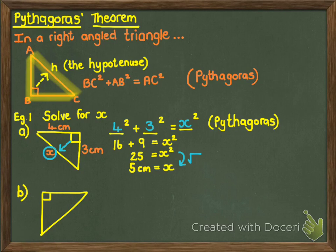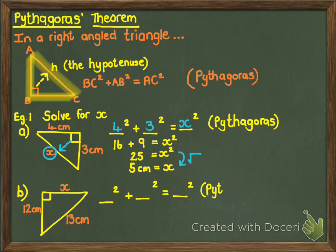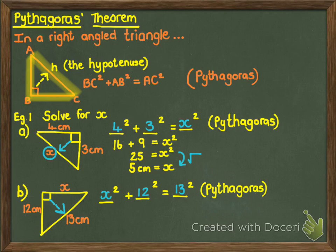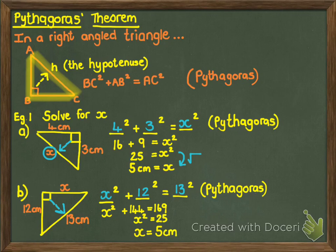Let's look at another example. Still a right-angled triangle. What's different here is that X is not the hypotenuse. Pythagoras' Theorem says: something squared plus something squared equals hypotenuse squared — and we write in brackets: Pythagoras. Our hypotenuse in this example is 13, so put that in first, then put in the other two sides. That means I have X squared plus 144 equals 169. Then I subtract 144 from both sides, and then square root both sides to get the answer.